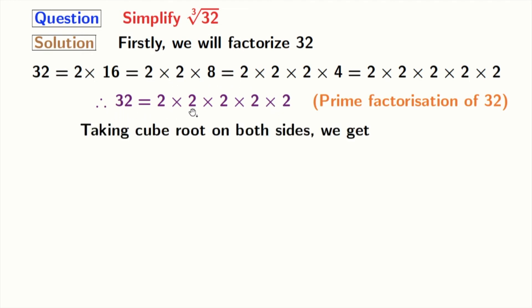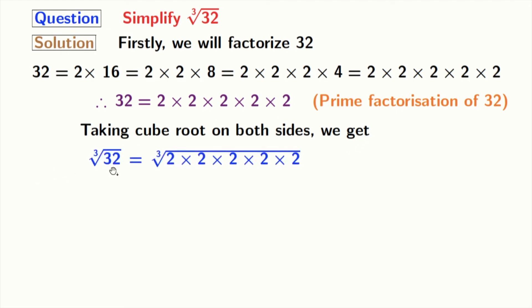Now, taking cube root on both sides, we get cube root of 32 is equal to cube root of 2 times 2 times 2 times 2 times 2.